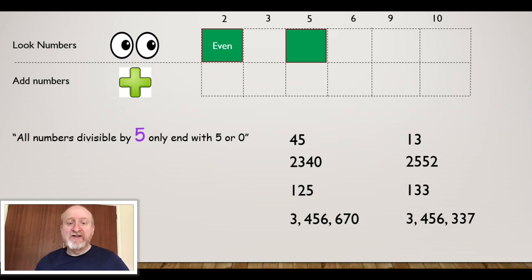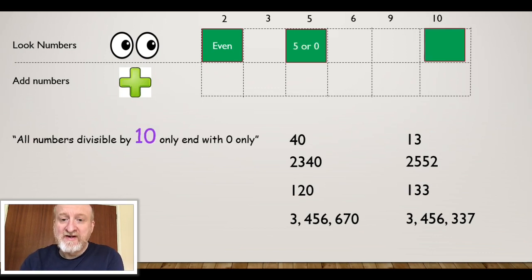Whereas 13, 2,552, 133, and that big number there which ends in a 7, don't end in a 0 and don't end in a 5, so therefore they're not divisible by 5.